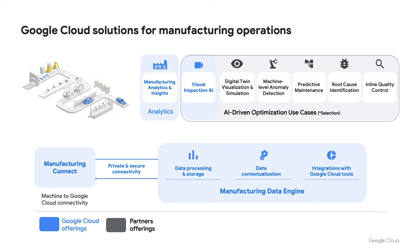What we're going to talk about today is our overall Google Cloud solutions for manufacturing operations — our end-to-end solution. We've built a solution that moves all your data seamlessly from your factory floor using Manufacturing Connect, co-developed with Litmus Automation, which seamlessly integrates this data into our manufacturing data engine using the best of GCP's technology. The data is contextualized and easy to access, and using our data engine API, we can then build use cases on top of this.